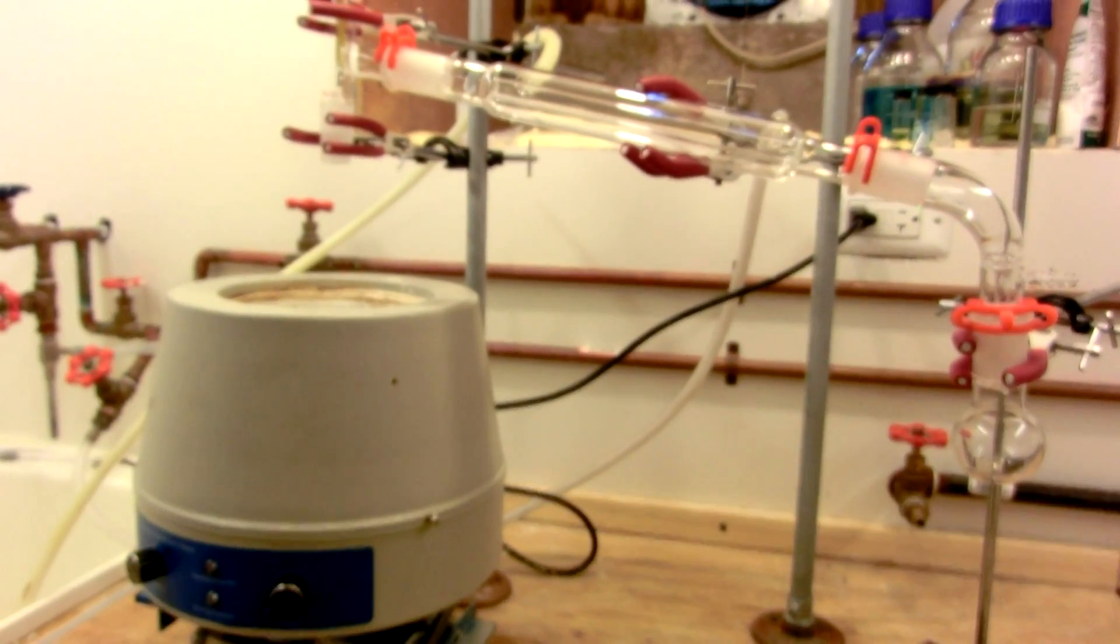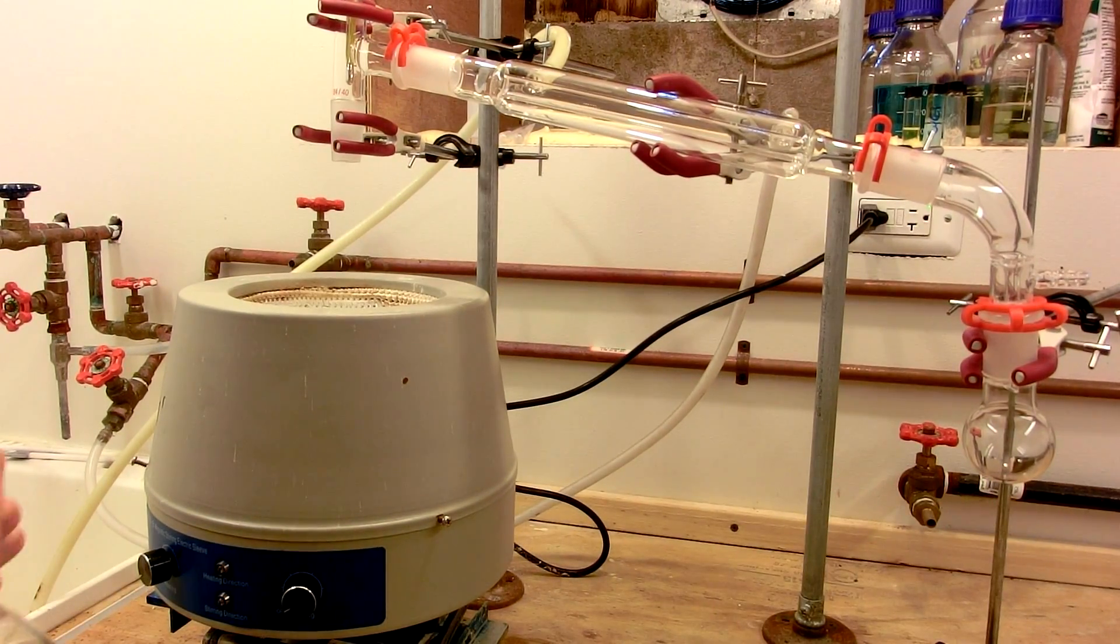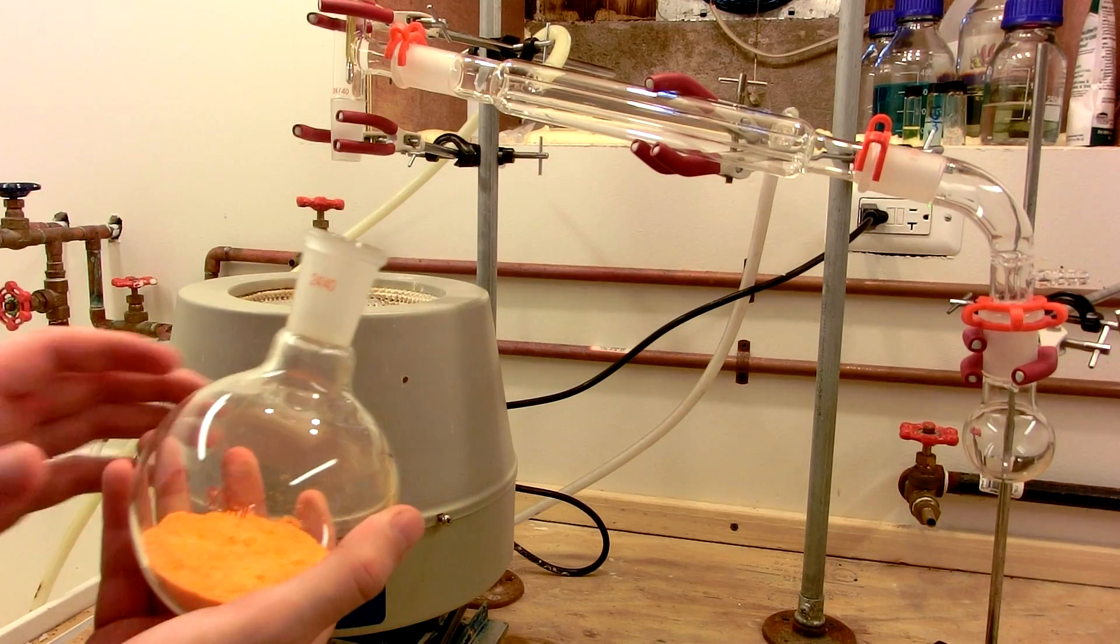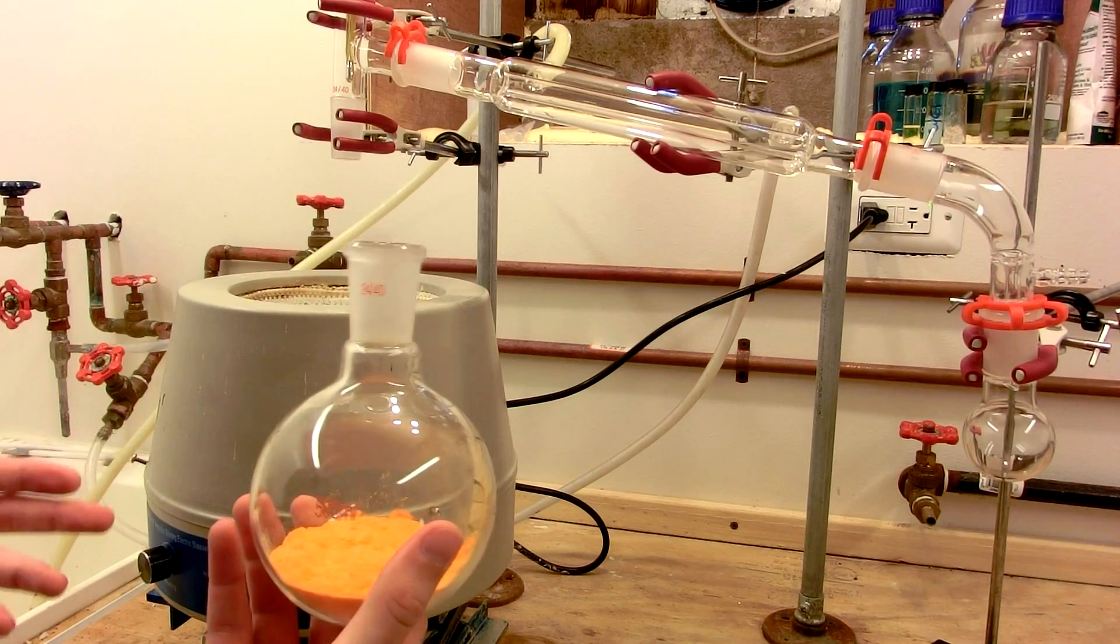Once the reactants are charged into the flask, set up for simple distillation. I have a 50 milliliter receiving flask here, since the theoretical yield should be about 33 milliliters of chromal chloride. Don't connect up the boiling flask yet, because we still need to add the sulfuric acid.